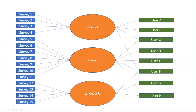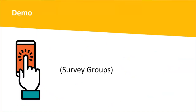Let me show a scheme to illustrate what that means. I have created three survey groups: A, B, and C. The first four surveys are assigned to survey group A. User B, who is only assigned to survey group A, can see and work on these four surveys, but will not see surveys assigned to other groups. User C is assigned to both A and B, so user C can see these eleven surveys because they belong to survey groups C is assigned to. User C will not see the last four surveys because those belong to group C, and C is not assigned to it.